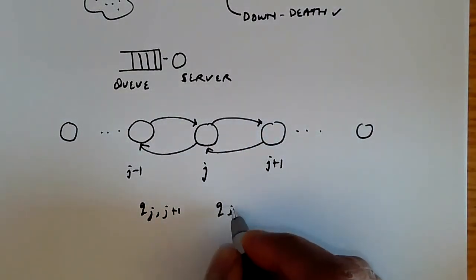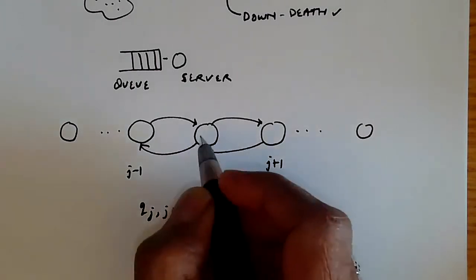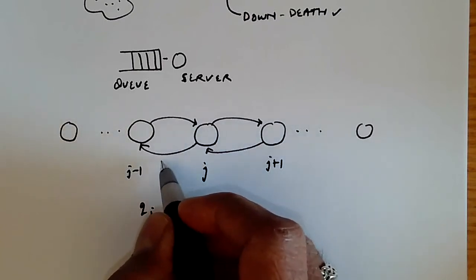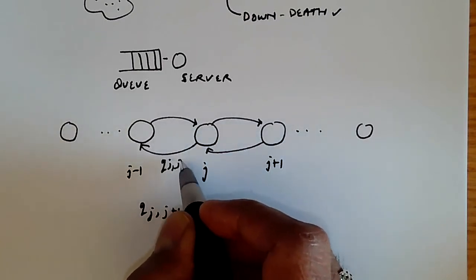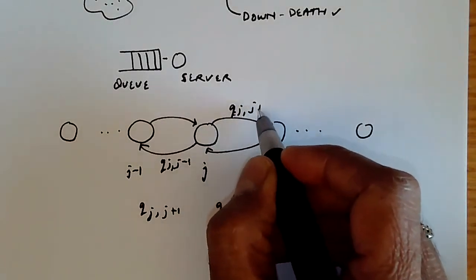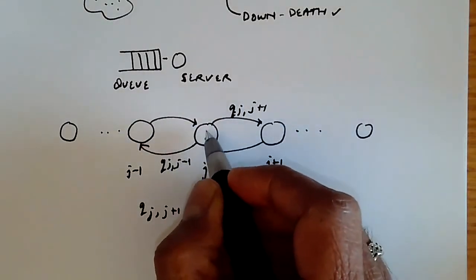And q j comma j minus 1 as the rate at which we go from state j to state j minus 1. So this is q j, j minus 1. This is q j comma j plus 1. Those are those two rates for state j.